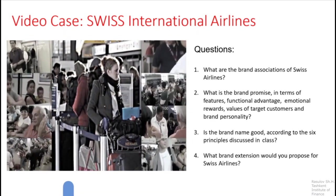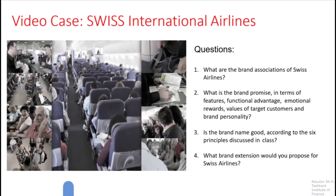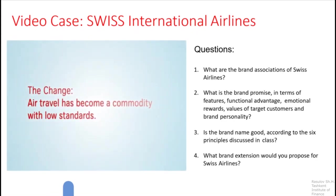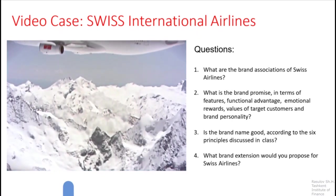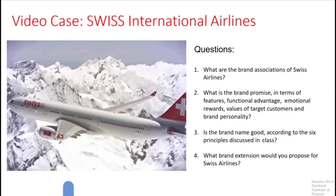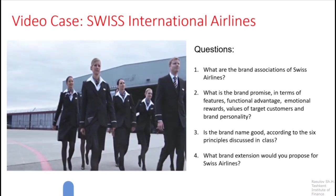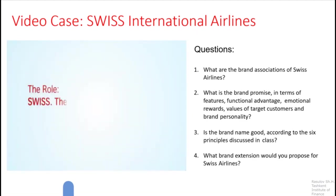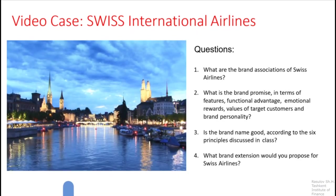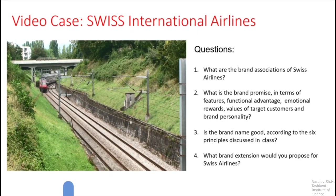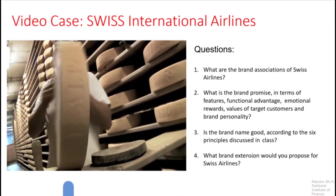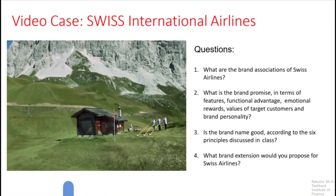Airplanes have become generic and flying has become ordinary and grey. Air travel has become a commodity with low standards. But Swiss International Airlines refuses to give in. The brand has always been the spokesperson for quality and uniqueness. So to lead the change, the Swiss brand is fighting back as the defender of quality. In Switzerland, high standards are simply expected — the Swiss are known as precise, efficient, focused on detail, discreet, friendly, and passionate about quality. Being the defender of quality is part of the national DNA.